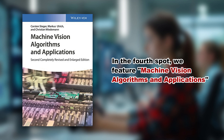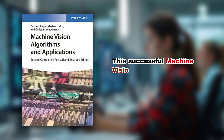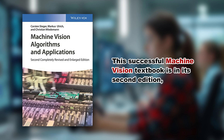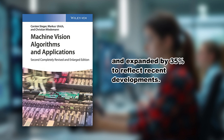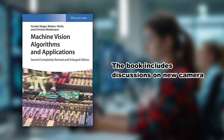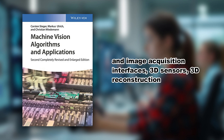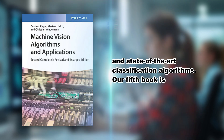In the fourth spot, we feature Machine Vision Algorithms and Applications by Karsten Steger. This successful machine vision textbook is in its second edition, which has been completely updated and expanded by 35% to reflect recent developments. The book includes discussions on new camera and image acquisition interfaces, 3D sensors, 3D reconstruction, object recognition, and state-of-the-art classification algorithms.